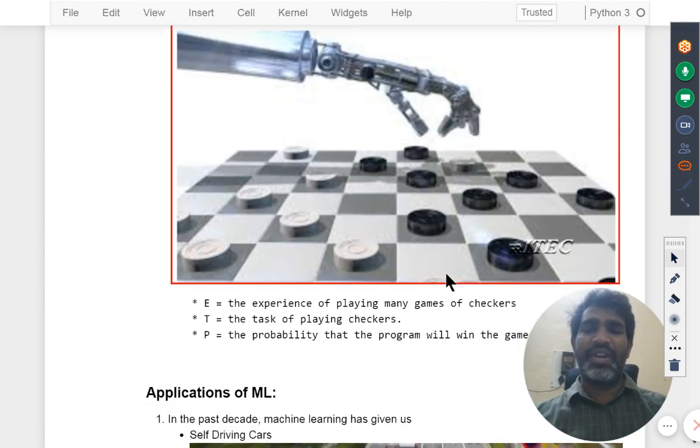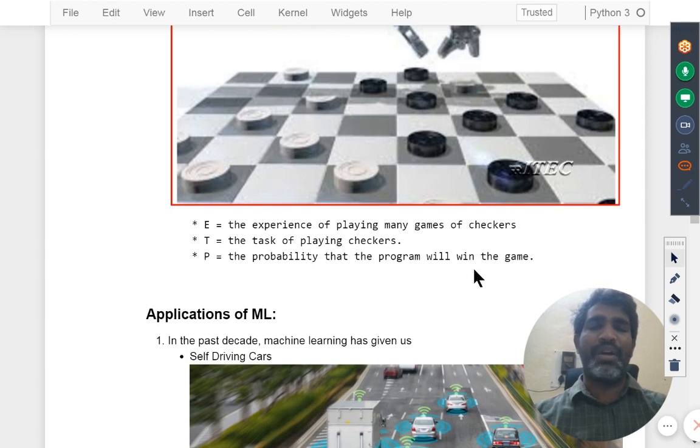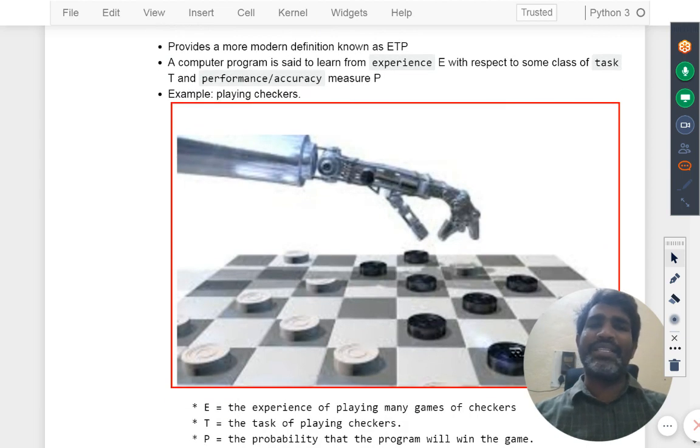Finally, how accurately it is playing, that's performance or accuracy. E is the experience of playing many games of checkers, T is the task of playing checkers, P is the probability that the program will win the game. Tomorrow you may be designing a cancer detecting machine learning algorithm. What is the experience? N number of manually identified cancer cases. What is the task? Identifying the cancer. What is P? How accurately we are identifying it. If I give 100 patients, out of 100 how many we can identify accurately.